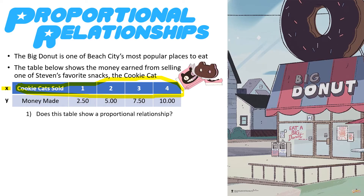So the first question I'm going to ask you is: does this table show a proportional relationship? Remember from our previous lesson, to find if this shows a proportional relationship, with each set of data you're going to divide the Y value by the X value. So with this table, you're going to be dividing $2.50 by 1, $5 by 2, $7.50 by 3. In each situation, you're going to get the same quotient — they all equal 2.5.